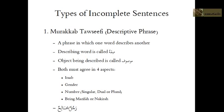One thing to note: if the first word were definite — Al-Rajulu — it would no longer be an incomplete phrase. Because it starts with a noun, it becomes a jumlah ismiyyah. Al-Rajulu becomes the Mubtada', and Salihun becomes the Khabr. Together they form a complete Jumlah Ismiyyah Khabariyyah. So 'Rajulun Salihun' means 'a righteous man,' whereas 'Al-Rajulu Salihun' means 'the man is righteous.'